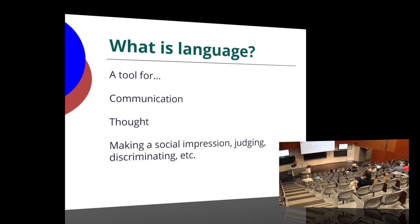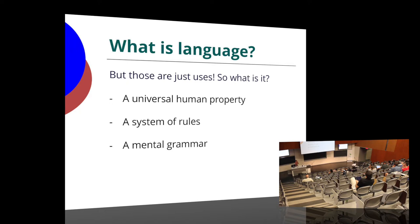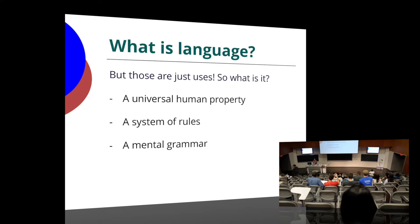So what is language, written broadly? We use it in a lot of different ways. We think of language as a tool for communicating, a tool for thinking in our own minds, for making impressions on people, for making judgments and discriminating between different options. Unfortunately, people also use it for discriminating against each other — we'll try to avoid that part. When we're trying to learn a language, we're often focusing on it from this perspective. But all of those things are just uses — things we're trying to do with language. That's not what language is underlyingly.